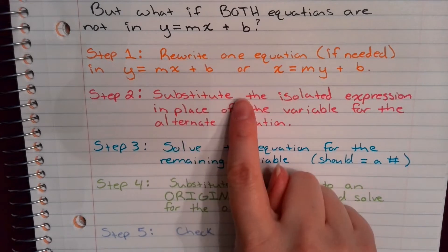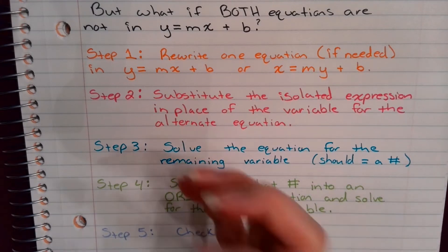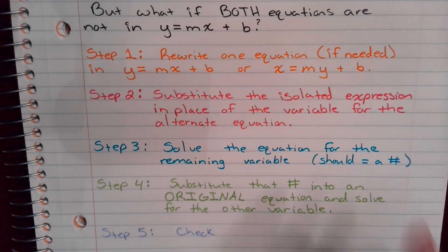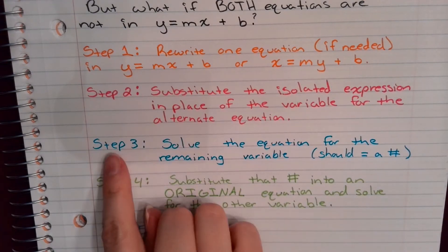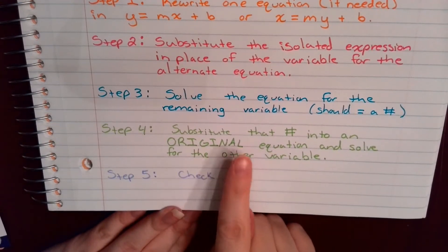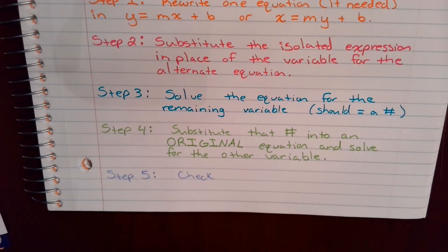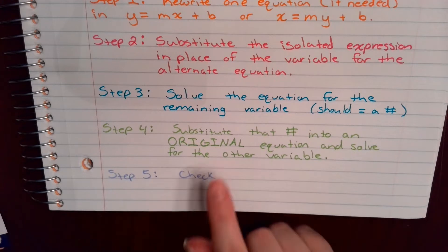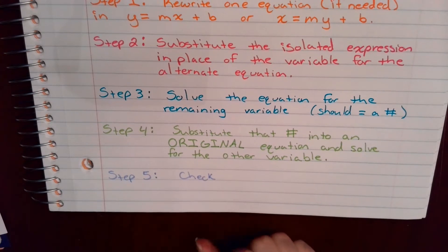Step 2: substitute the isolated expression in place of the variable in the alternate equation — take the simplified one and plug it in for the non-simplified one. Step 3: solve for the remaining variable to get a value. Step 4: take that value and substitute it back into one of the original equations — not your rewritten one, because if you rewrote it wrong, you'd be plugging into an incorrect equation. Then solve for the other variable and check.